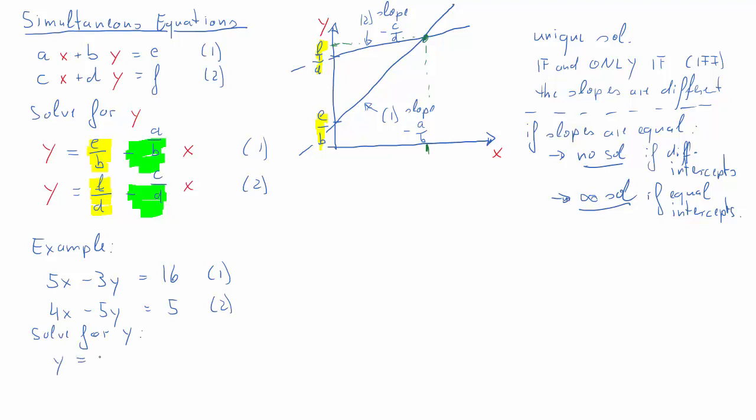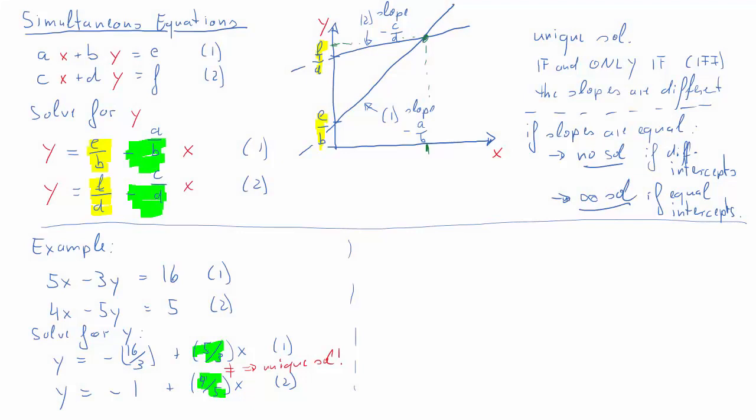You should find the following solution for these operations. So please make sure that's a 4, so 4 over 5 times x is the slope in the second equation. These are the two slopes, they are clearly different, and therefore we should expect to find a unique solution for this problem.